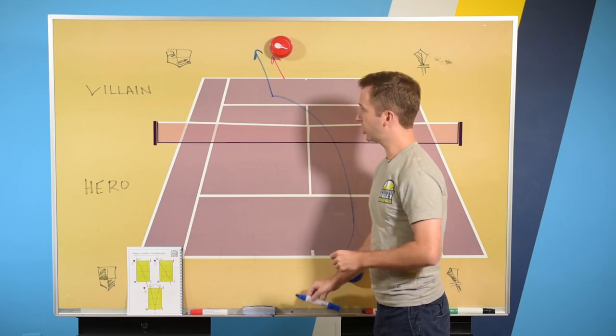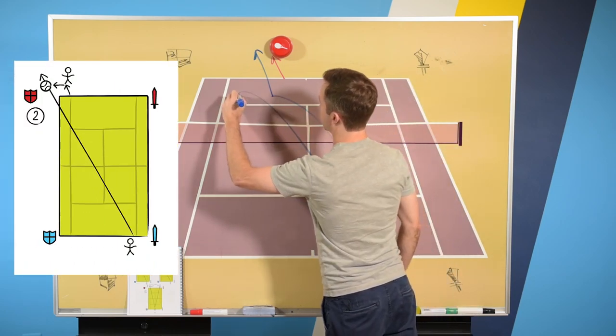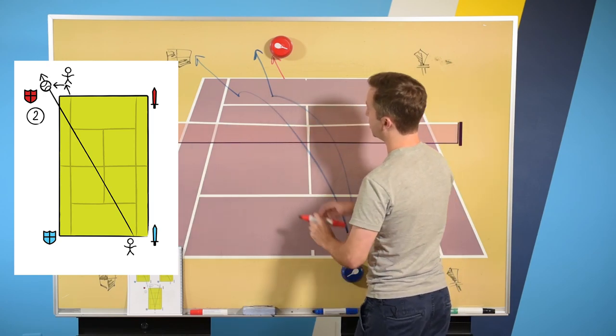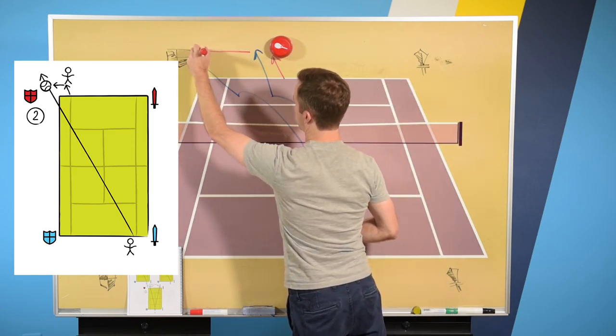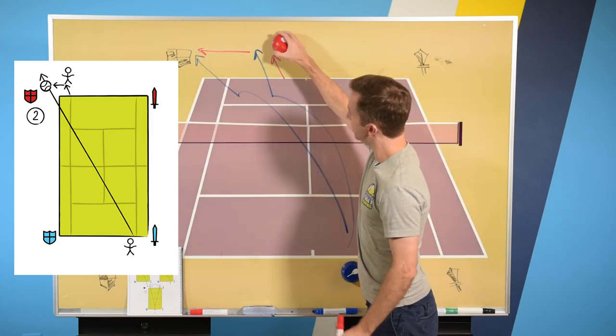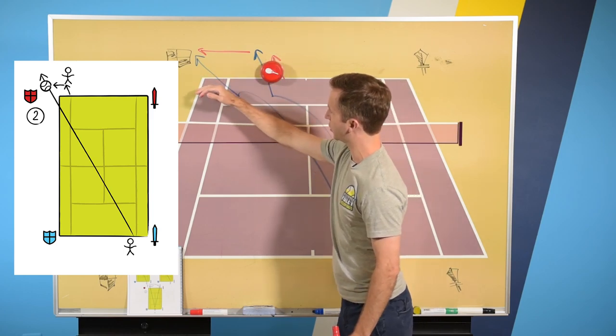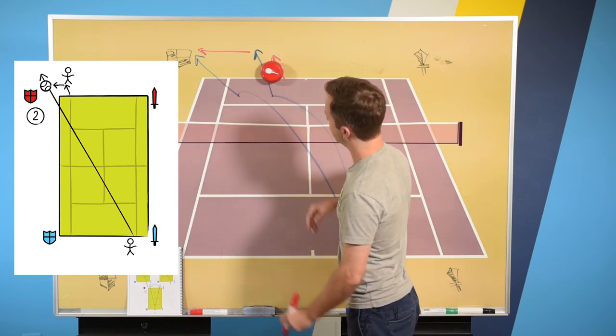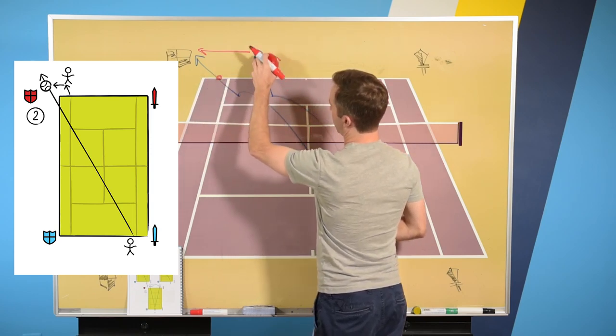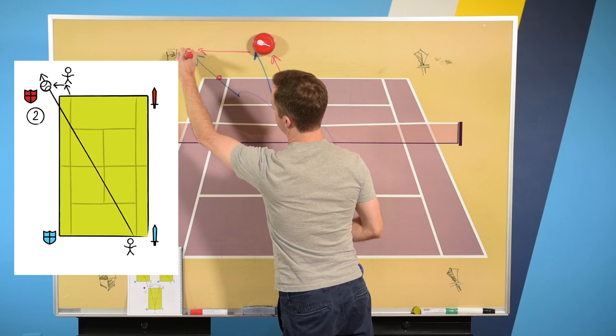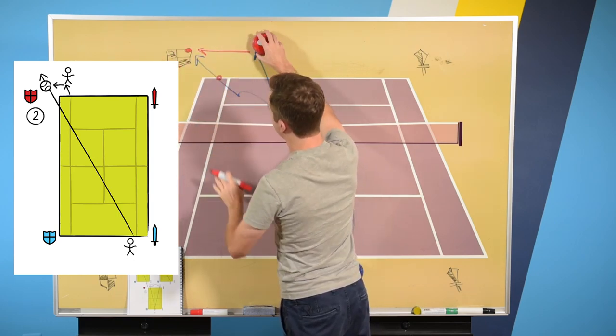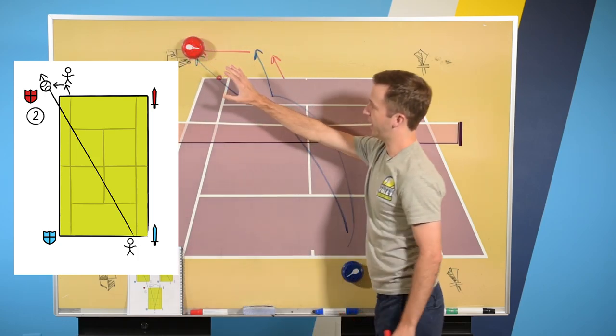Then, your second shot is going to be a shot that stretches Villain off of the court. So, you push them back, now you're stretching them off the court. And the reason you're pushing back first is because if you didn't push back first and you tried to stretch off the court, notice if Villain just moves along the baseline, he would need to go like right here to get to that shot. But by pushing back, you're taking advantage of, rather, you're making the angle you hit more effective. You're pulling them further off the court with that next shot.